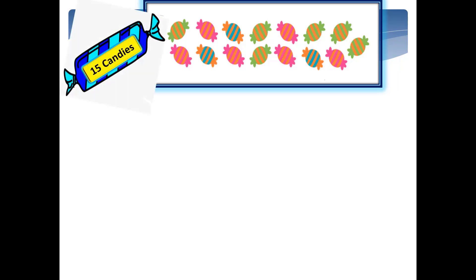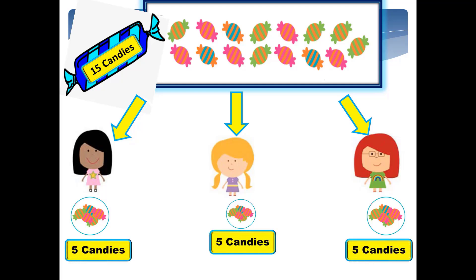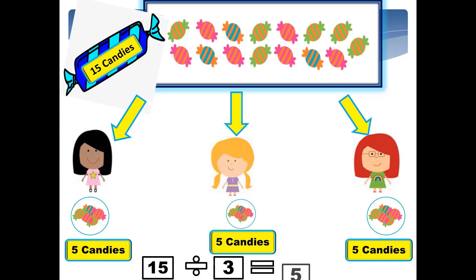Now look at this۔ یہ کیا ہے؟ Yes, these are candies. اور how many candies are present? 15۔ اب میں ان 15 candies کو 3 students میں equally divide کرنا چاہتی ہوں۔ کیا یہ ممکن ہے؟ Yes! ہم بالکل ان کو equally divide کر سکتے ہیں اور ہر student کو 5 candies ملیں گی۔ ہم نے 15 candies کو 3 students میں equally divide کیا اور ہر student کو 5 candies مل گئیں۔